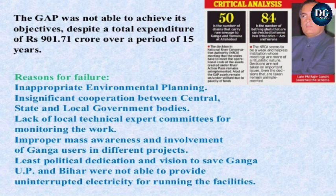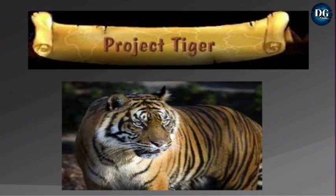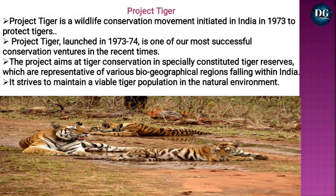Reasons for the failure of the Ganga Action Plan: first, inappropriate environmental planning; second, insignificant cooperation between central, state, and local government bodies; lack of local technical expert committees for monitoring the work; improper mass awareness and involvement of Ganga users in different projects; least political dedication and vision to save the Ganga; and UP and Bihar were not able to provide uninterrupted electricity for running the facilities.